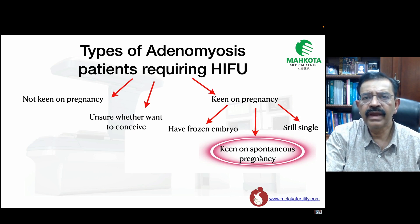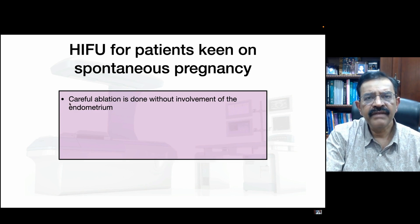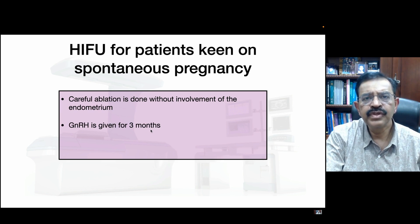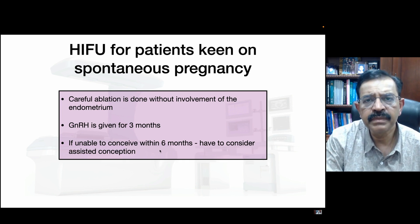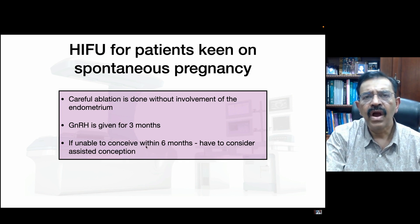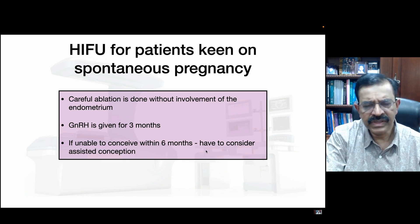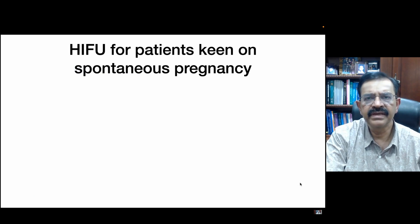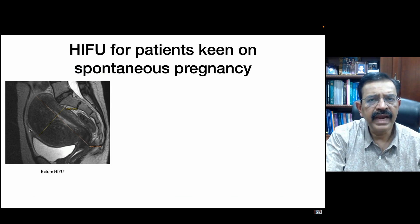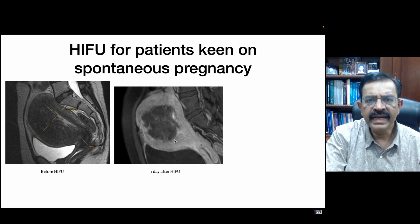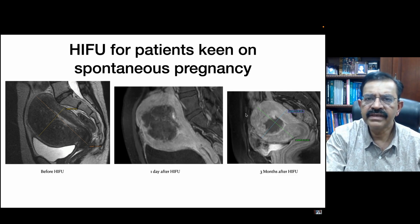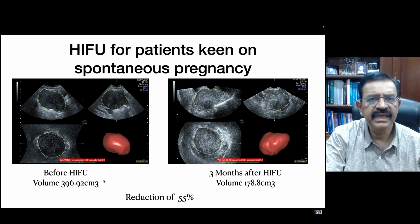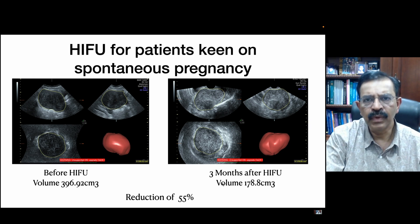For patients keen to have spontaneous pregnancy, I still perform careful ablation without endometrial involvement, then give GnRH analogue for three months. If they are unable to conceive within about six months, I ask them to consider assisted conception, as after six months the chances of adenomyosis recurring are very high. Here is an example: a patient with a large anterior adenomyosis. This is an MRI one day after HIFU, and at three months the uterus has already shrunk — a 55% reduction from 396 cm³ to 178 cm³. She has been asked to try to conceive spontaneously, and if unsuccessful, to consider IVF.